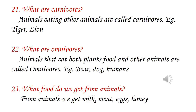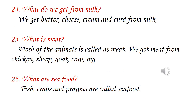What food do we get from animals? From animals we get milk, meat, eggs and honey. What do we get from milk? We get butter, cheese, cream and curd from milk.